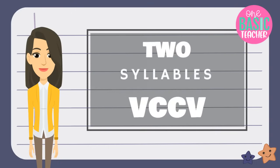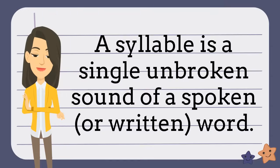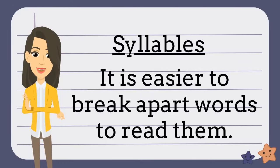In this episode, we're going to learn how to syllabicate two-syllable words. Did you know that a syllable is a single sound of a spoken or written unbroken word? Some words have more than one syllable. When you are trying to read words that have many syllables, it might be hard to do, so we can break the word apart to make it easier to read.